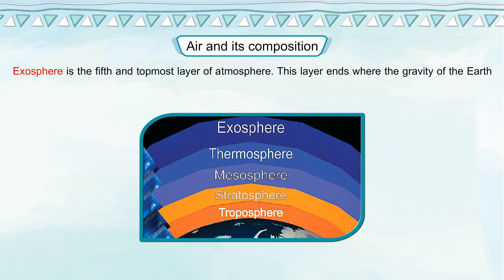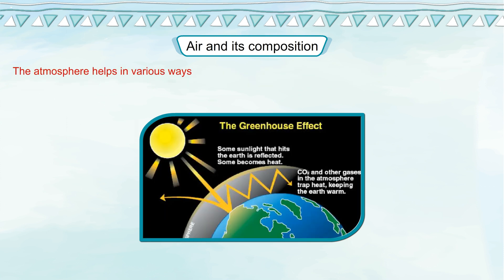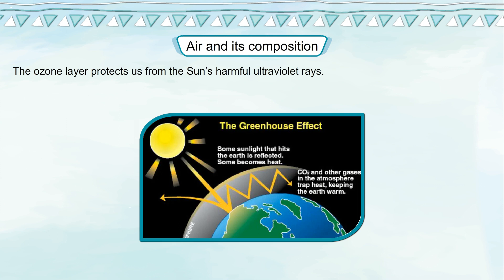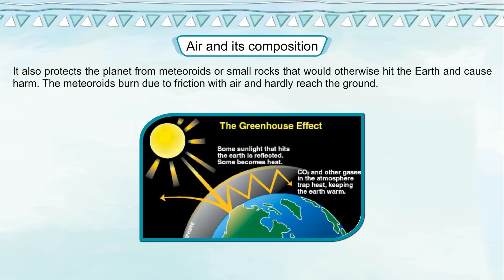Exosphere is the fifth and topmost layer of the atmosphere. This layer ends where the gravity of the earth is too weak to prevent tiny particles or molecules from drifting into space. The atmosphere helps in various ways: it maintains a habitable temperature for life on earth, the ozone layer protects us from the sun's harmful ultraviolet rays, and it also protects the planet from meteoroids — small rocks that would otherwise hit the earth. The meteoroids burn due to friction with air and hardly reach the ground.